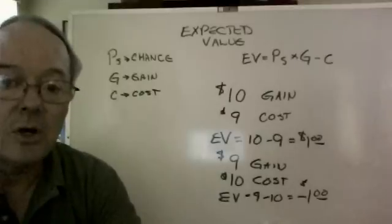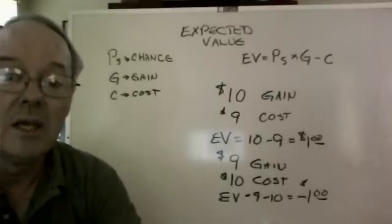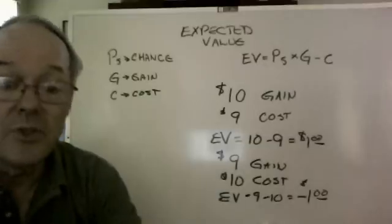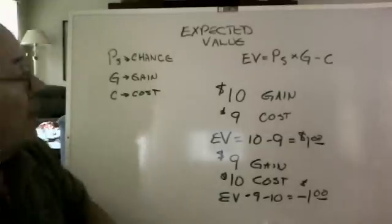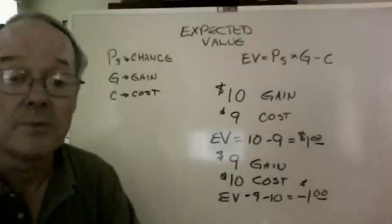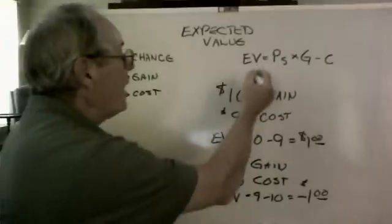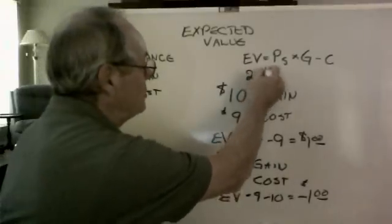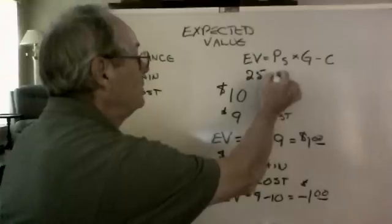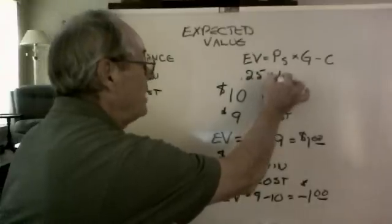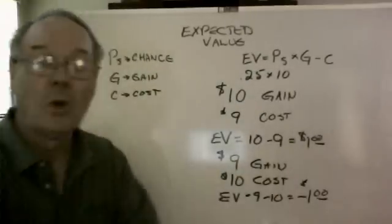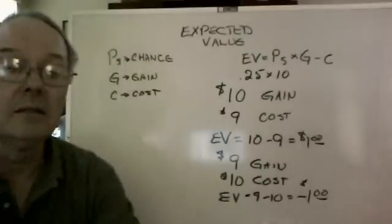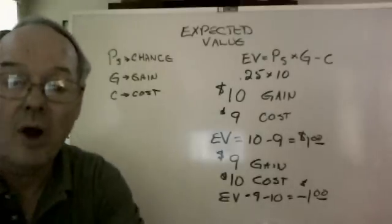Now, let's look at a possibility of success that's other than 100%. Let's go ahead and try something at, say, 25%. So if you have a 25% chance of getting .25 times my $10, what could you pay in order to make that a profitable investment?